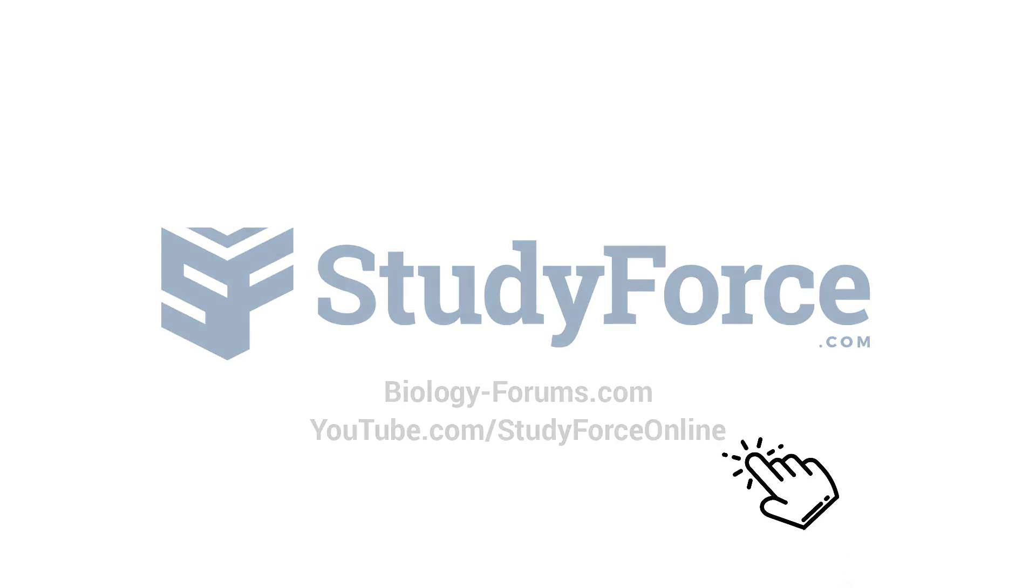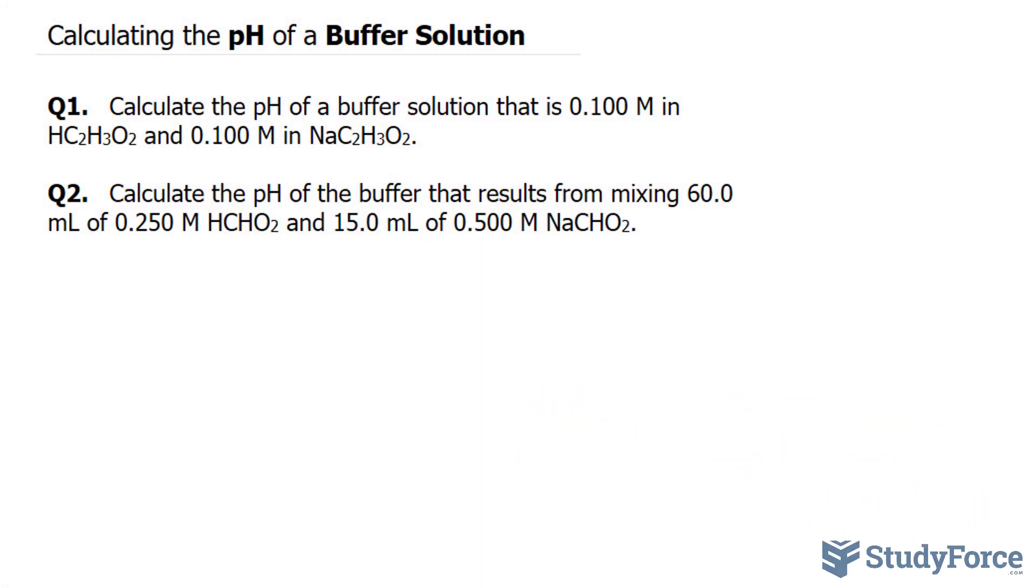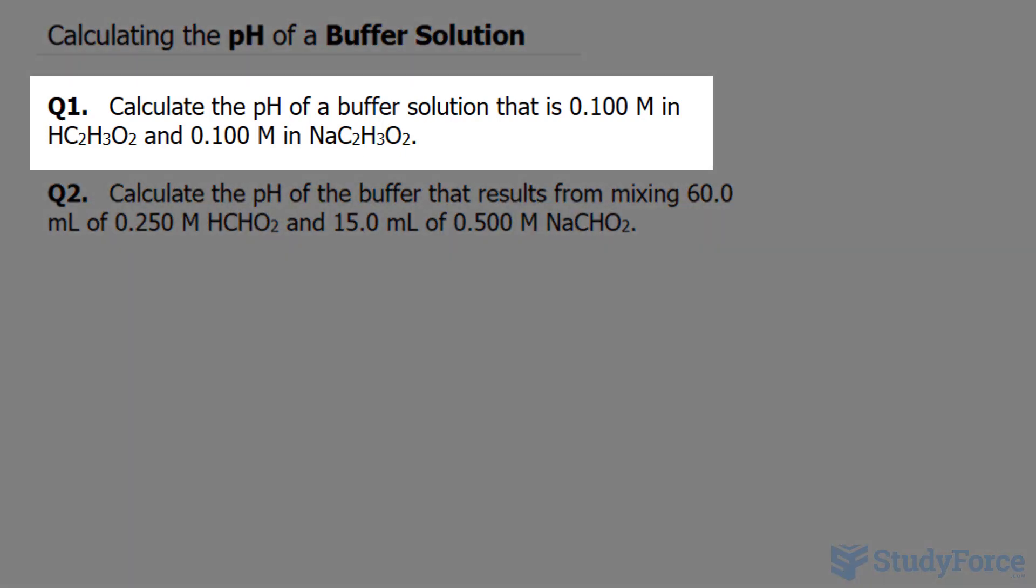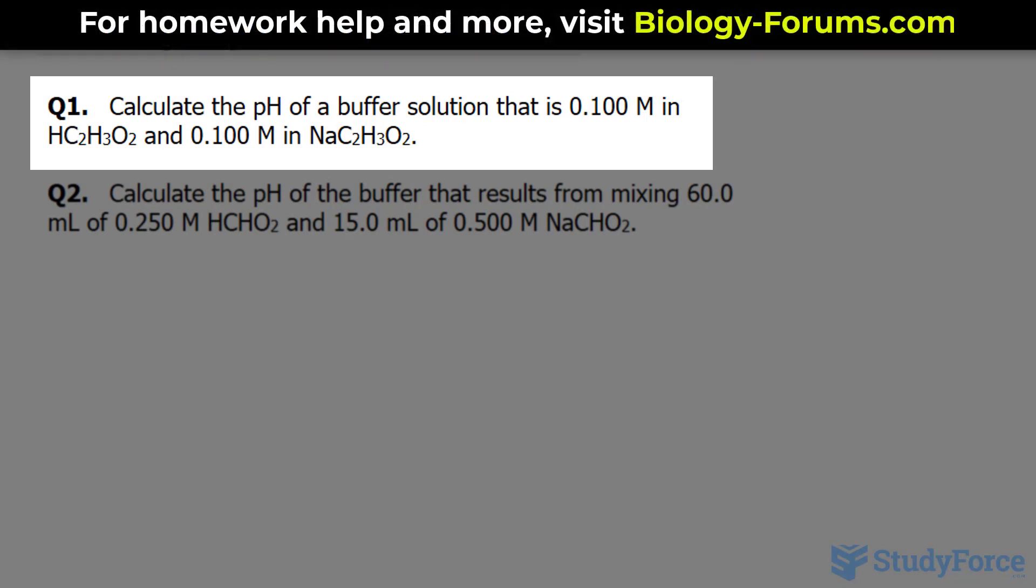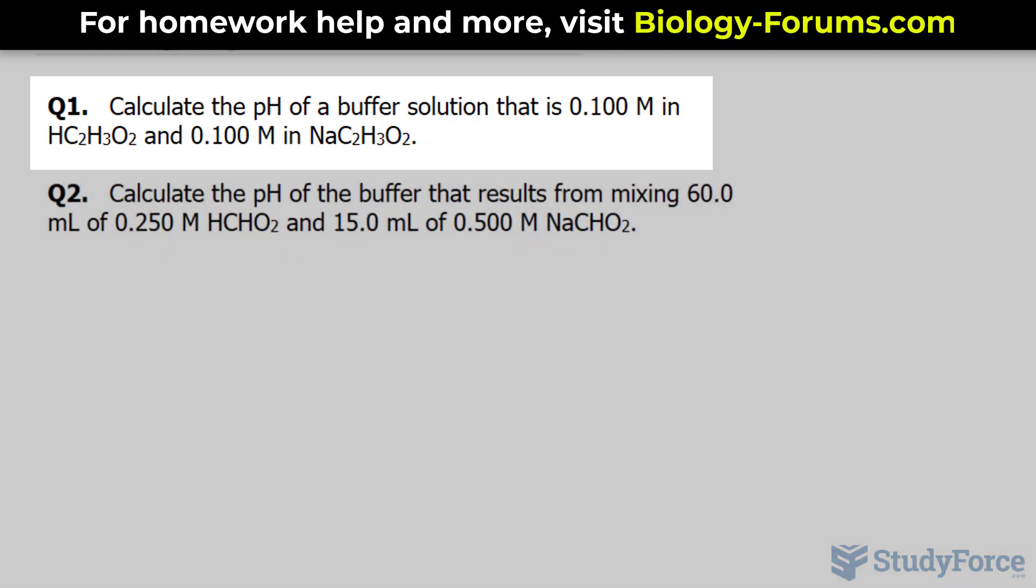Welcome back to another Study Force tutorial. In this video, we'll be showing you how to calculate the pH of a buffer solution. Question 1 reads: calculate the pH of a buffer solution that is 0.100 molar in HC2H3O2 (acetic acid) and 0.100 molar in NaC2H3O2.